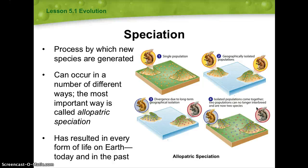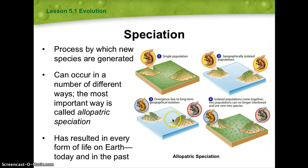Speciation is a process by which new species are generated and can occur in several ways. The most important is allopatric speciation, which has resulted in every form of life on Earth. In allopatric speciation, a single population becomes geographically isolated — for example, by a body of water — leading to divergence over long-term geographical isolation. Eventually the two populations can no longer interbreed and become two different species. Remember, a species is defined as an organism so closely related to another that it can breed and produce fertile offspring.